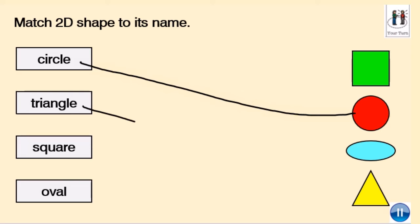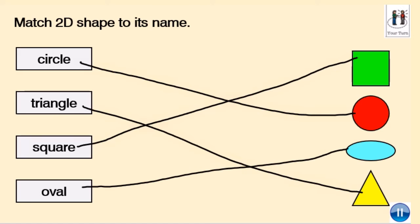Okay then, so we've got triangle, three sides, square, four sides all the same, and that leaves us with oval.